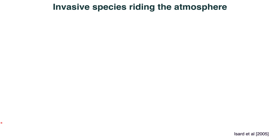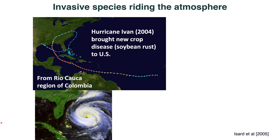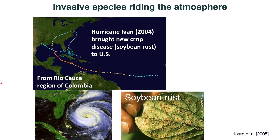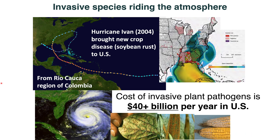We're going to switch gears and talk about how LCS could be useful for understanding how invasive species ride the atmosphere, in particular plant diseases. There was Hurricane Ivan in the early 2000s that brought a new crop disease, soybean rust, to the United States. The hurricane passed low enough to pick up airborne plant pathogens from South America and deposit them on the Gulf Coast. Soybean rust hadn't been in the U.S. before — it's an invasive species brought on a very coherent structure in the atmosphere. The cost of invasive plant pathogens is over $40 billion per year in just the U.S. alone.